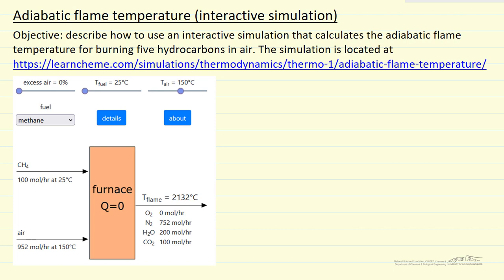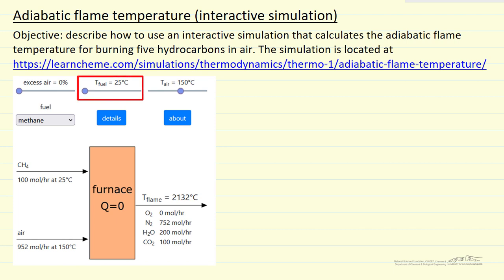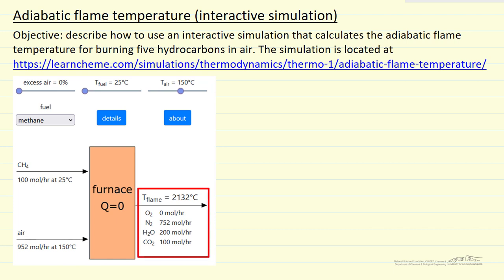I'm going to describe an interactive simulation that calculates the adiabatic flame temperature. It does this for five hydrocarbons. The simulation allows you to change the percent of excess air — it only uses air as a feed, not oxygen. You can change the temperature of the fuel, the hydrocarbon, and the temperature of the air that enters. Then it calculates the outlet temperature and the composition — moles of the products and the unreacted nitrogen.